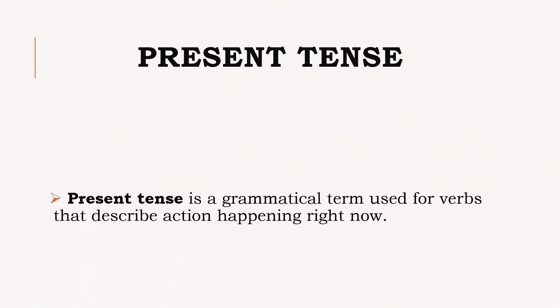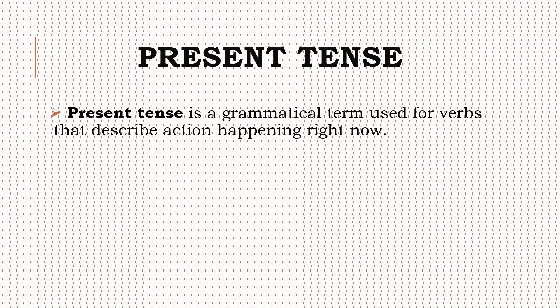It is present tense. Present tense is a grammatical term used for verbs that describes action happening right now. Jo action abhi is time mein ho raha hai, unko present tense batata hai — jho aaj action ho raha hai, jho abhi currently in this situation action ho raha hai, uske baare mein present tense batata hai.